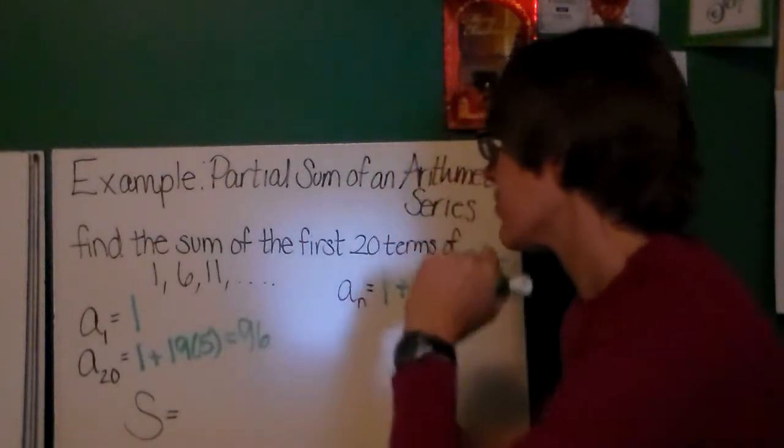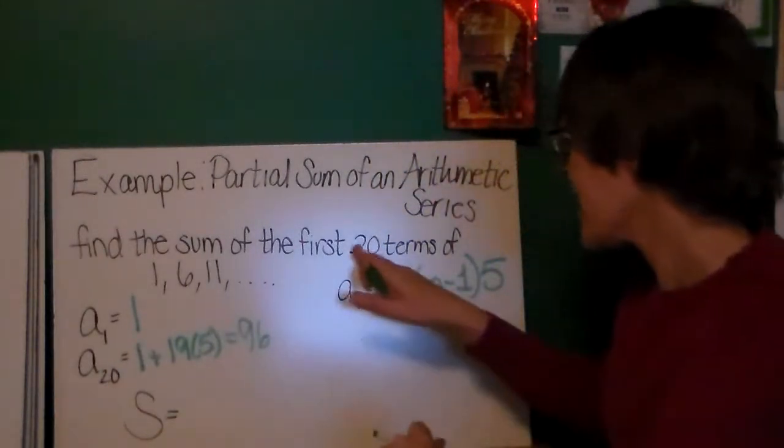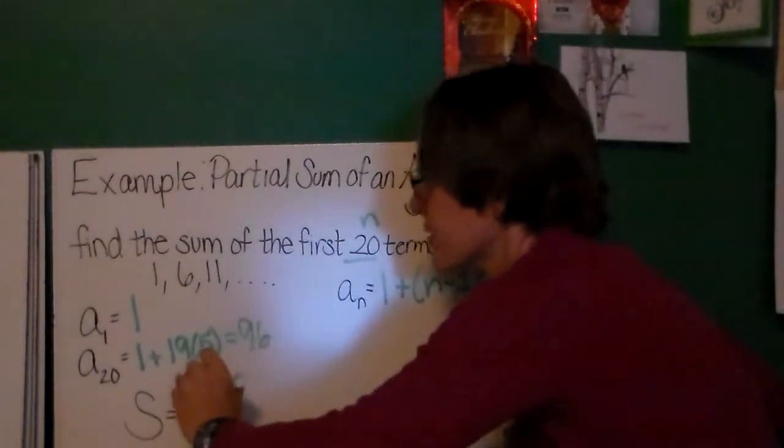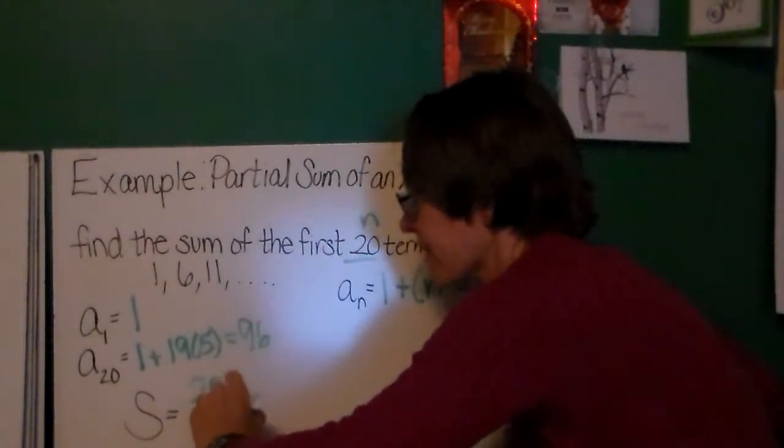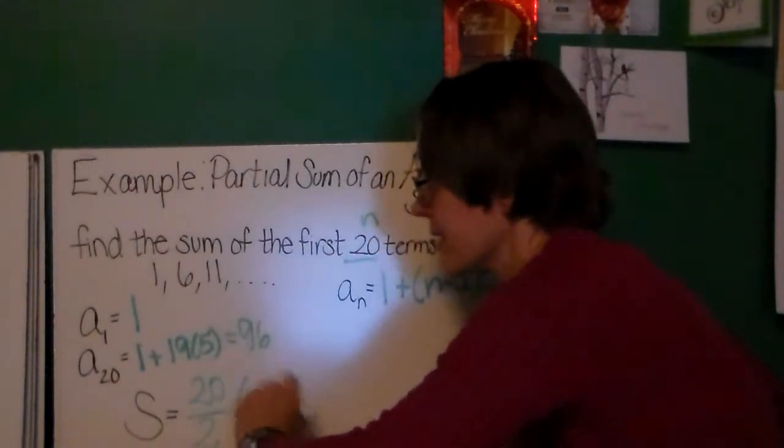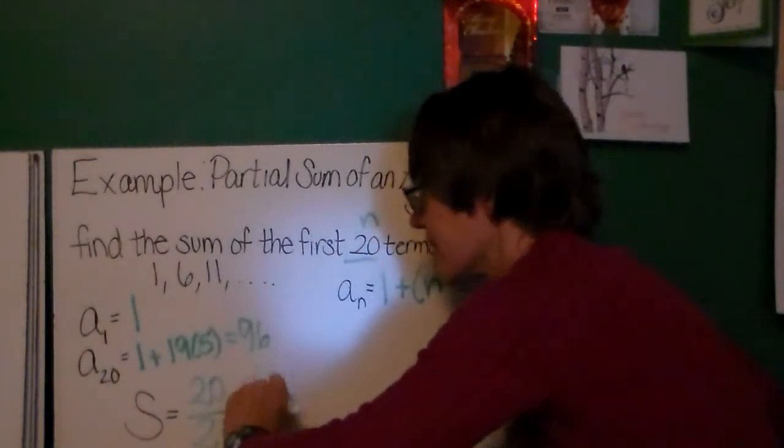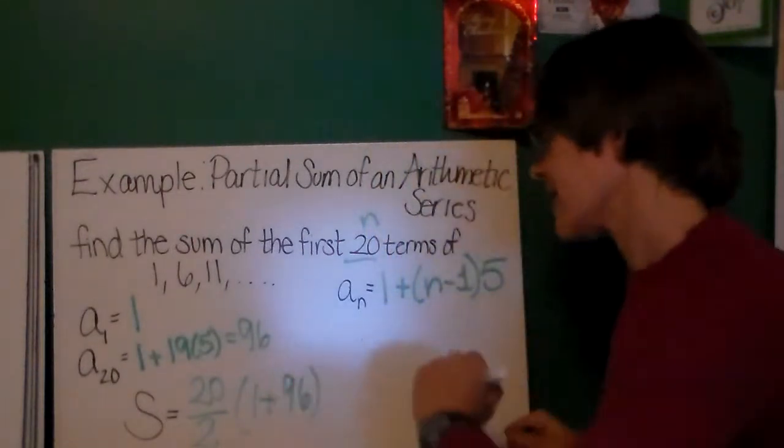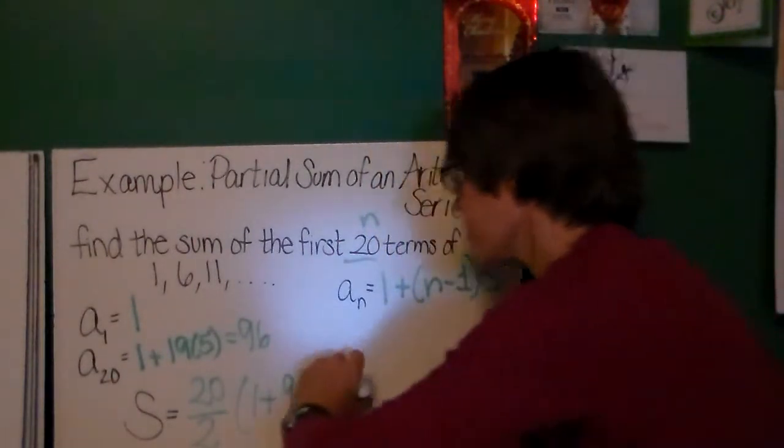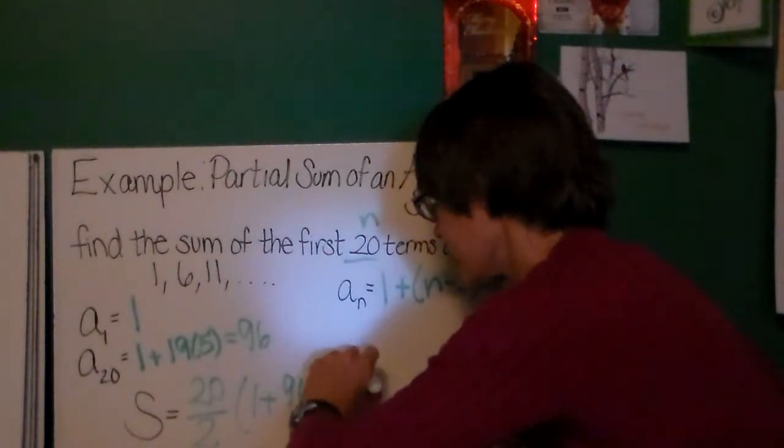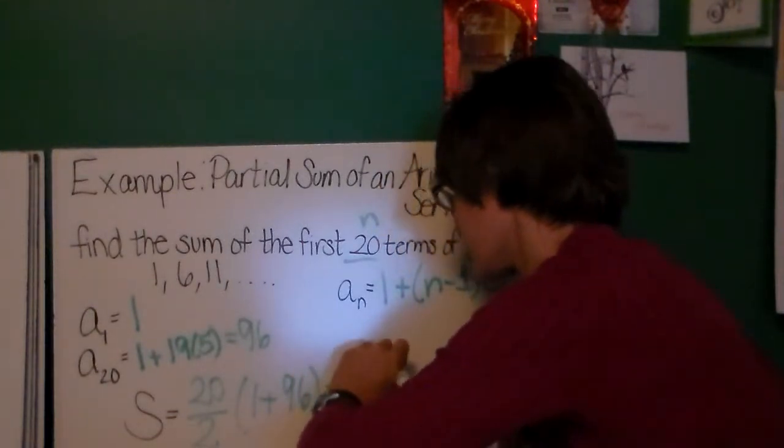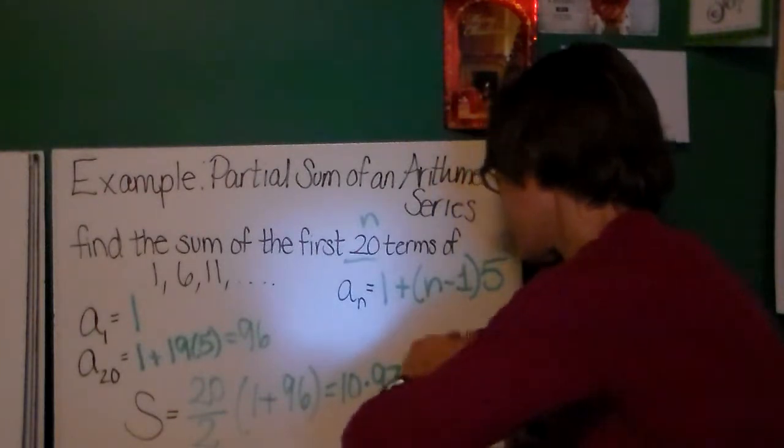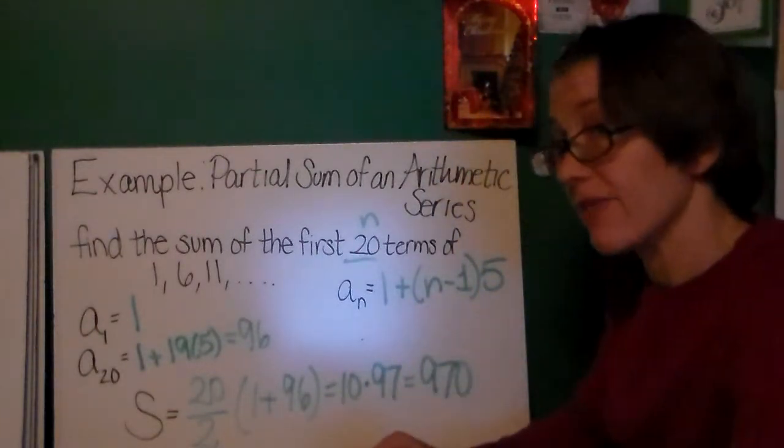So, I will have n is 20, the first 20 terms. So, I have 20 divided by 2 times 1 plus 96. So, 1 plus 96 is 97. 20 divided by 2 is 10. So, I have 10 times 97. And that is 970.